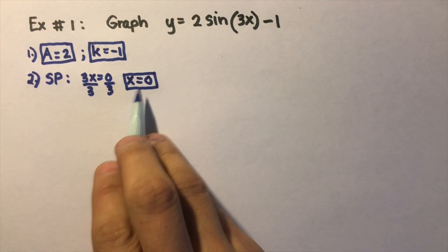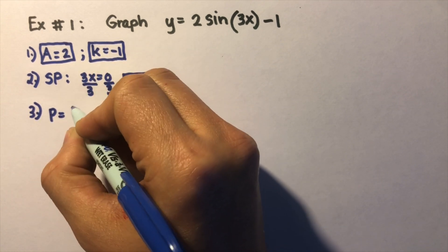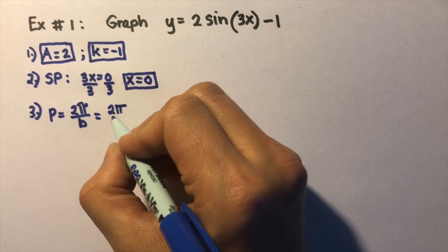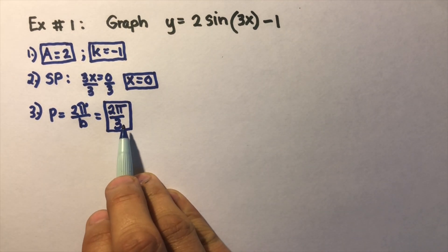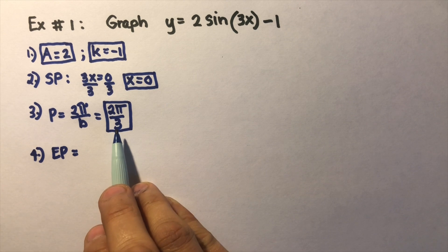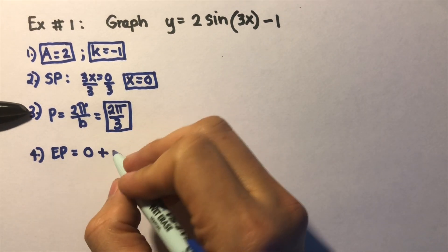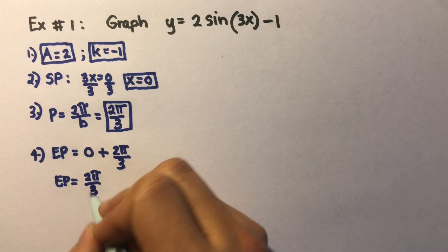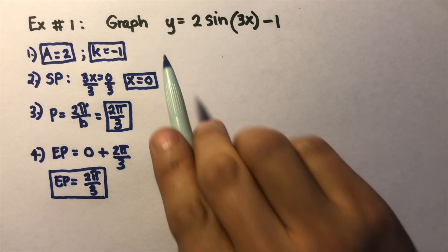The third step is to determine the period. The formula is 2π over B. The B here is the number in front of x, which is 3, so the period is 2π over 3. The fourth step is to find the endpoint: endpoint equals the starting point (zero) plus the period (2π/3), so the endpoint is 2π/3. These are all the important values we need to sketch the graph of y = 2 sin(3x) − 1.